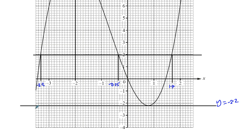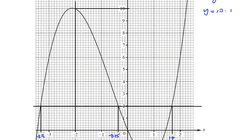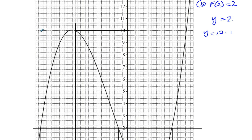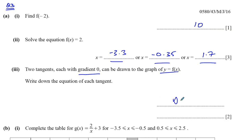And those are the two lines, where the gradient is 0 and it's a tangent to the curve. y equals minus 2.2 and y is equal to 10.1. So, y equals minus 2.2 and y equals 10.1.